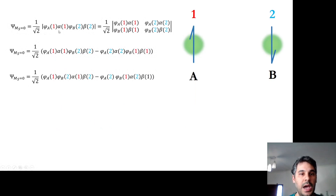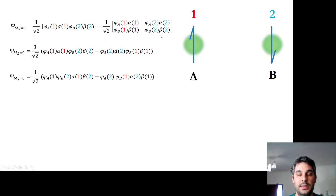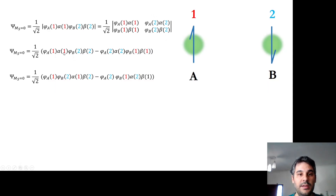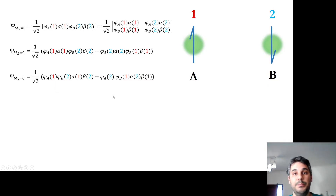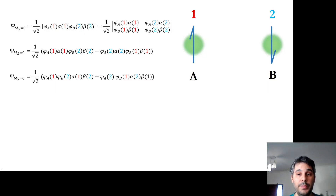If we try to put electron 1 with alpha spin and electron 2 with beta spin, we can write the Slater determinant as before. However, we will find that we cannot factor out the spin parts outside of the brackets — we cannot separate this function into a product of spatial and spin parts. What we have written here is a broken symmetry wave function, which we are going to discuss in the following video.